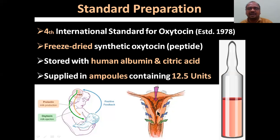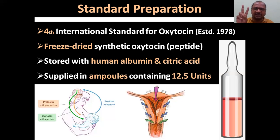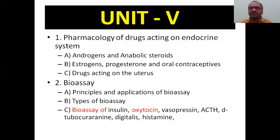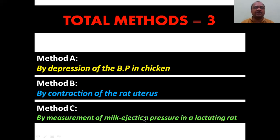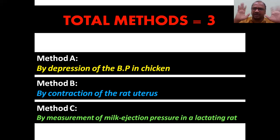The uterus contracts in various ways so that the baby will be delivered easily. That is why oxytocin injections are regularly given at the end of delivery. These are the two important characteristics of oxytocin. As per the syllabus, there are totally three methods for the bioassay of oxytocin. In the examination, one or two methods are more than sufficient.